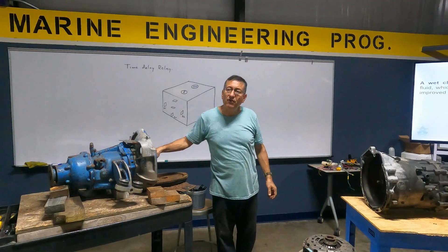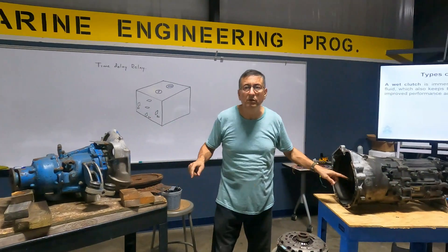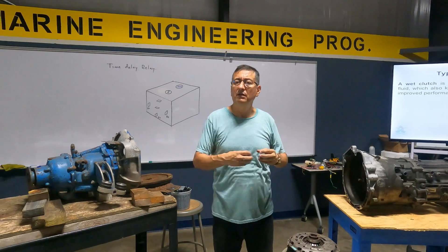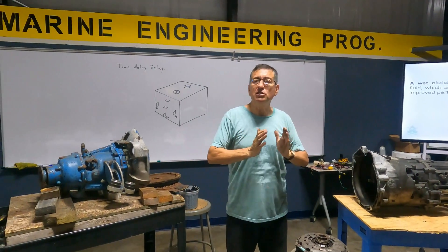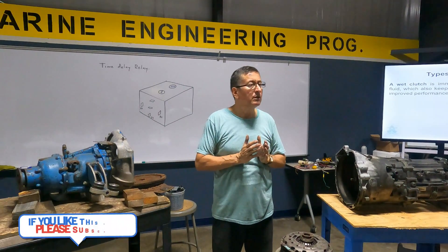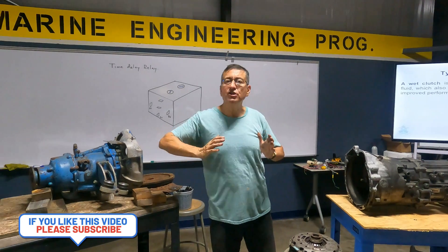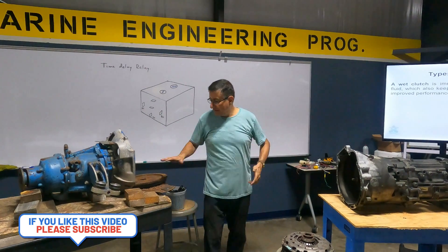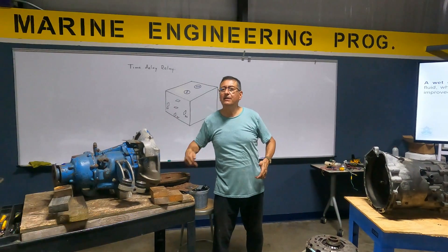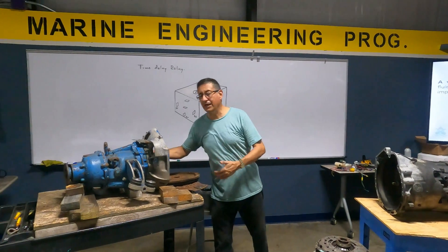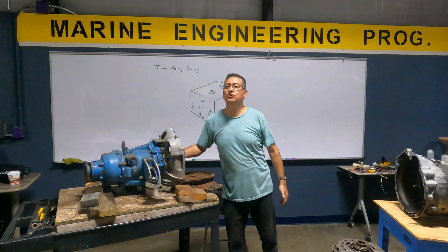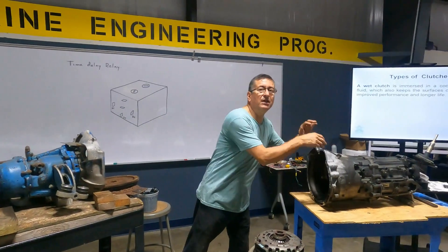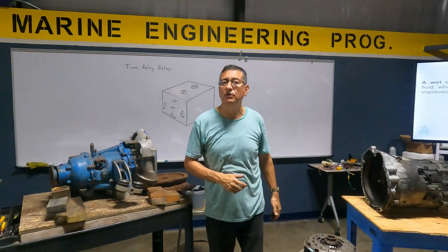The input shaft of the transmission is connected at some moments with the crankshaft — not directly. It's engaged with the clutch. When the clutch is activated, the crankshaft, this element, the flywheel, is connected with the input shaft of the transmission. Only when the clutch engages in automotive transmission.